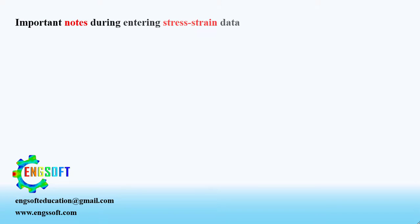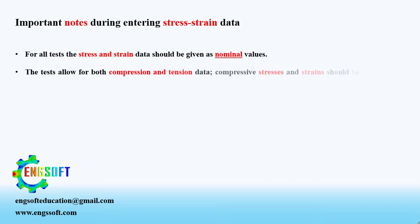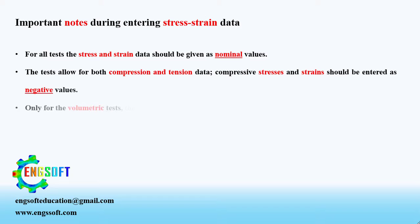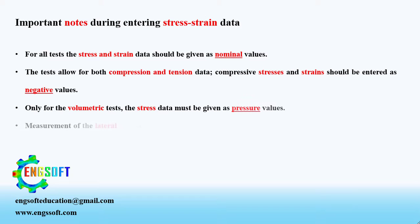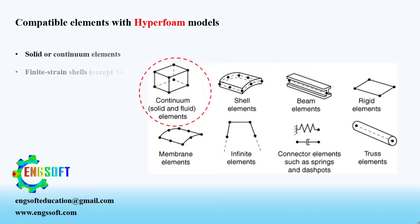There are some important notes while entering experimental stress-strain data. For all tests, the strain and stress data should be given as nominal values. The tests allow for both compression and tension data; compressive stresses and strains should be entered as negative values. Only for the volumetric tests, the stress data must be given as pressure values. Measurement of the lateral strains may make other tests redundant — for example, providing lateral strains for a uniaxial test eliminates the need for a volumetric test.